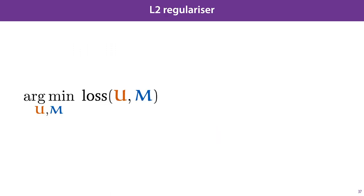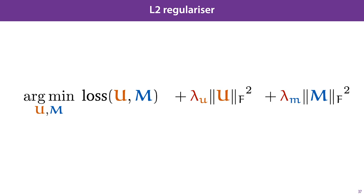The more weights and parameters we add for the users and the movies, the more likely our model is to overfit. If this is a danger, then it may help to regularize a little. We can do this by adding a simple regularization term over the parameters. Here we're using the Frobenius norm, which is just the matrix equivalent of the vector L2 norm.